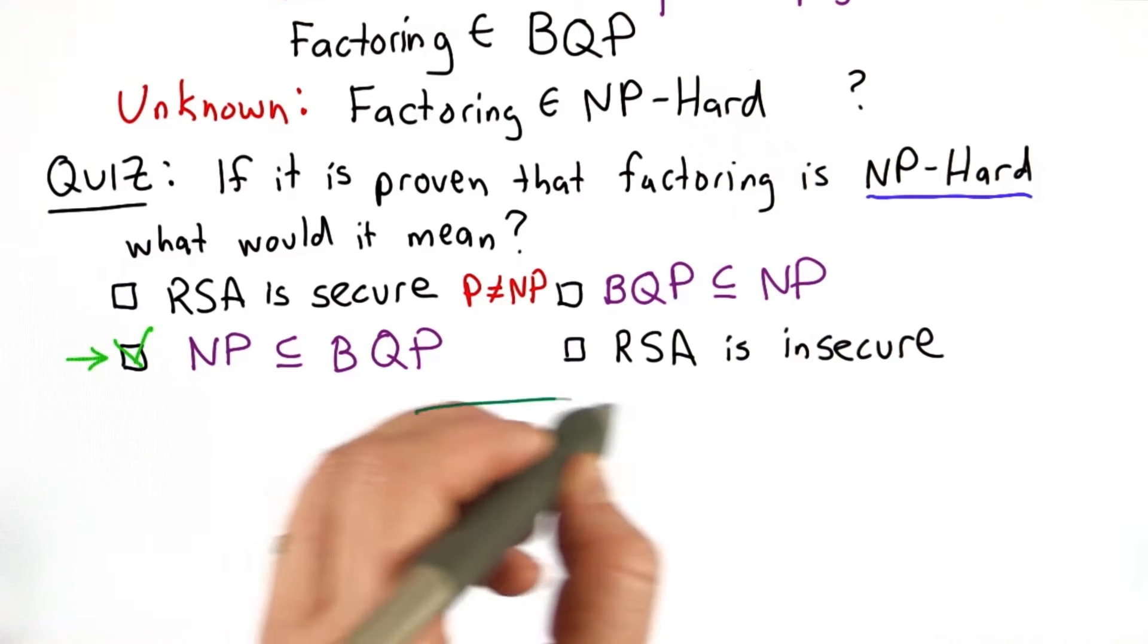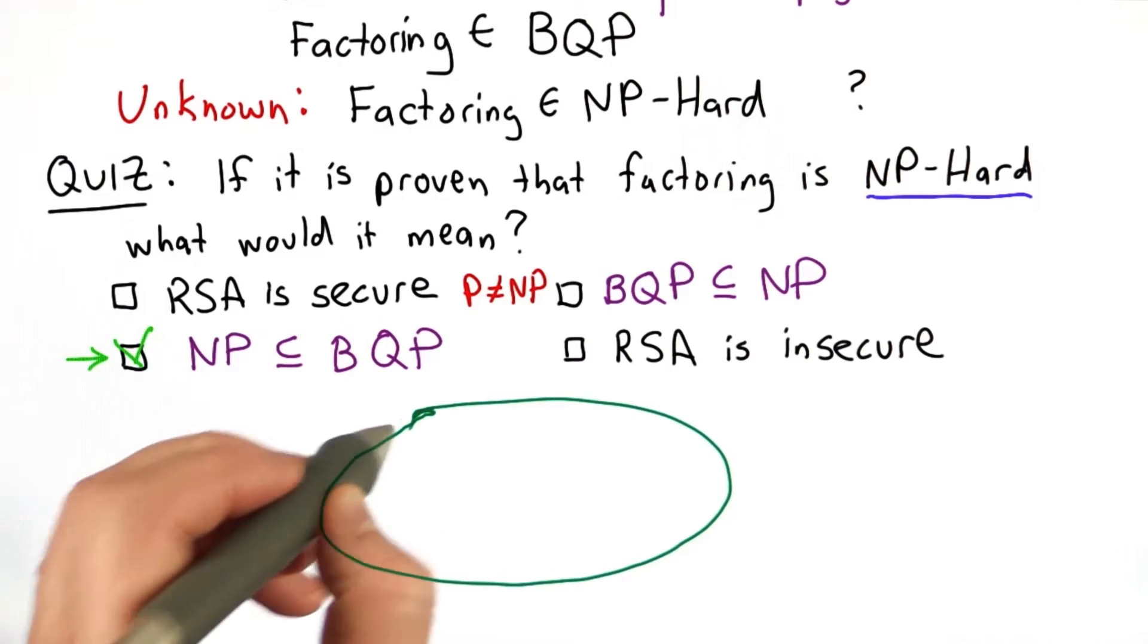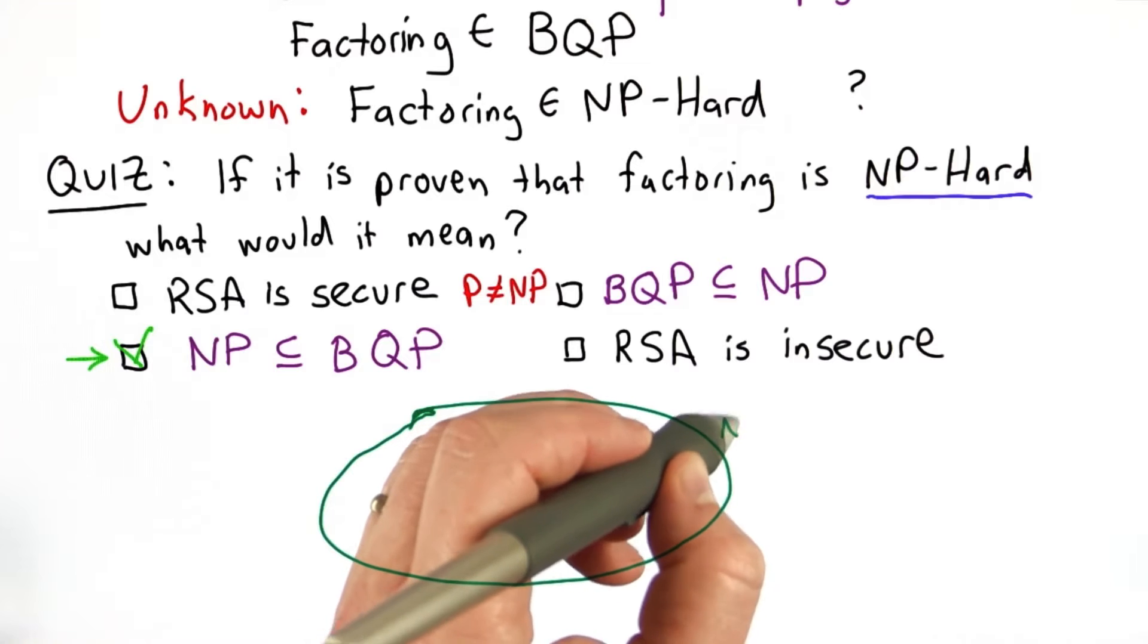To see why this is the case, we can think about our complexity classes as sets of problems. That makes the green circle the class NP.